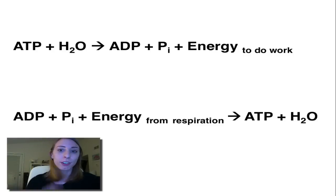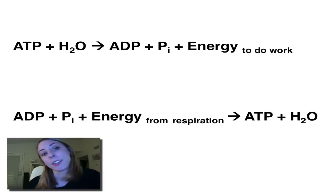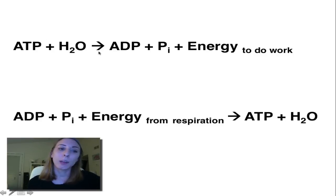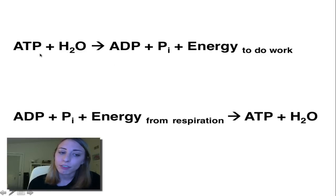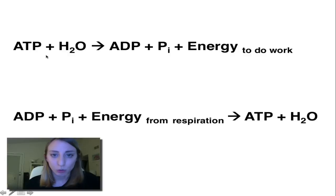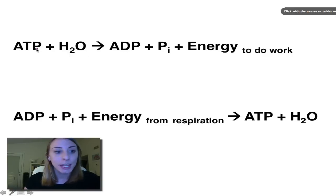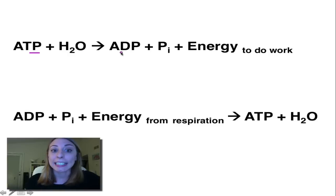So let's briefly go over the equations about how this happens. Water is actually part of this reaction — we need water to break off the phosphate, though it's a bit more detail than we need right now. So if we add ATP and water, we can break off that phosphate to get ADP and a free phosphate.